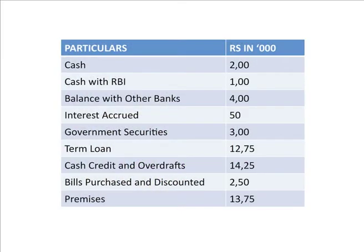Let us analyze the debit side. Cash will be reflected in schedule 6. Cash with RBI 1 lakh is also part of schedule 6. Balance with other banks goes in schedule 7. Interest accrued will go in schedule 11 under other assets, since it is an asset on the debit side. Government securities 3 lakh will go in schedule 8, that is investments. Term loans, cash credit, and bills purchased and discounted are all part of schedule 9, that is advances. Advances forms a major part of the bank's balance sheet, and we sometimes need to make provisions as per the RBI master circular guidelines.